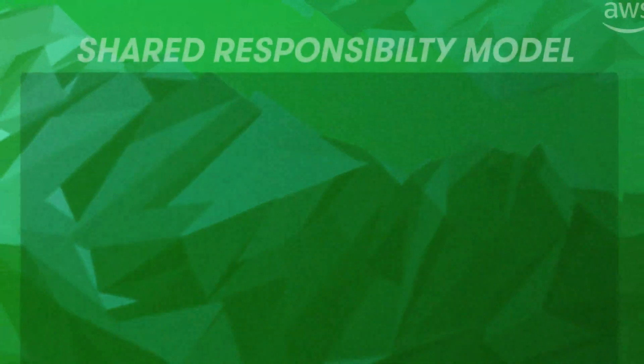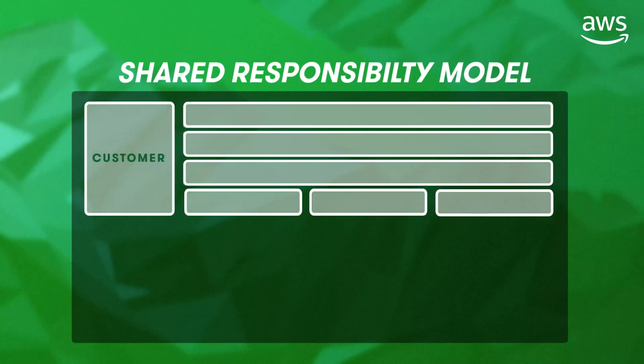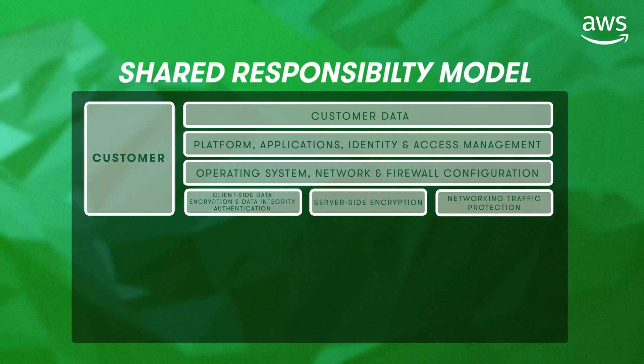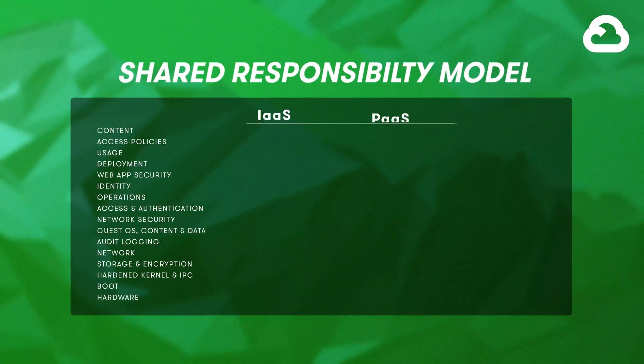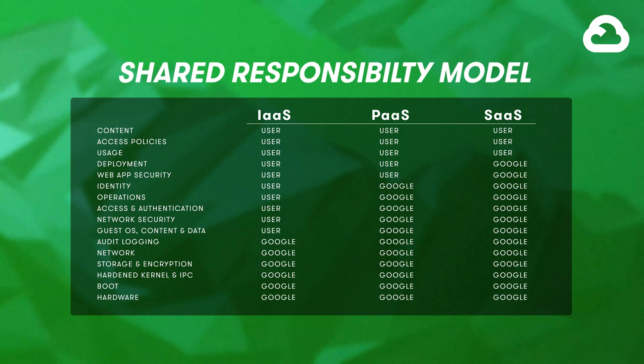AWS has taken a more simplistic approach to the shared responsibility model, splitting it into two sections. Customers are responsible for security in the cloud — their own data, user accounts, applications, and so forth. AWS is responsible for security of the cloud, including underlying hardware in their data centers such as physical hosts, storage, and networking. Google's approach is a bit more complex, as they specify in detail in each instance who is responsible for security. In general, all three cloud providers follow the same principles for shared responsibility — they just have slightly different approaches.